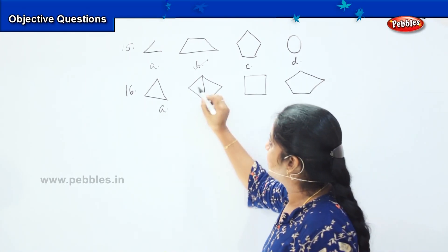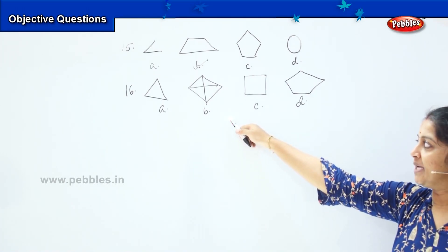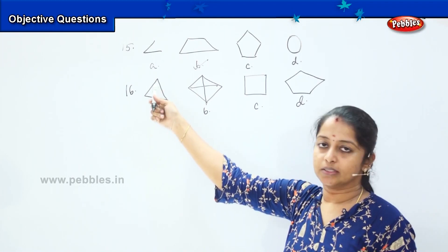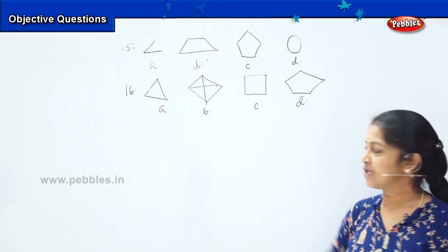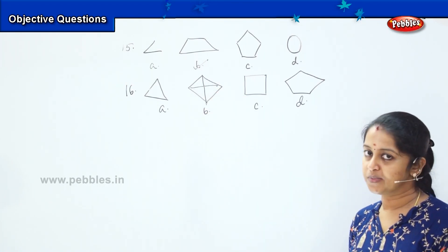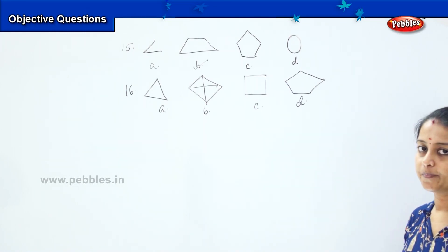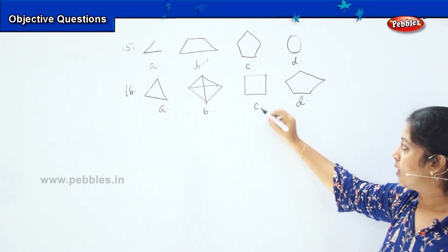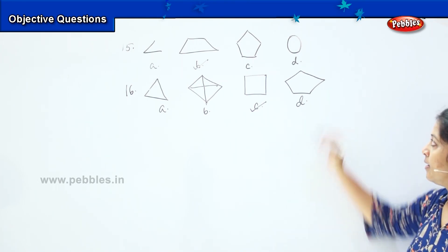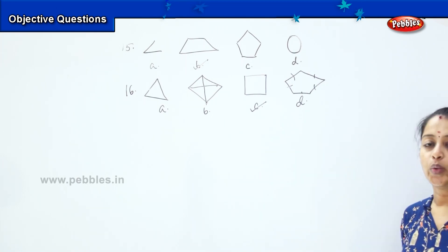Now, in question number 16, you have to identify which among these is a square — is it option A, B, C or D? Option A is a triangle because it has 1, 2 and 3 sides. Option B is a diamond shape where the sides are not equal, so it is not a square, because a square has all sides equal. Option C has 1, 2, 3, 4 sides and all sides are equal — so option C is the right answer. Option D is not a square because it has 5 sides all of different length.